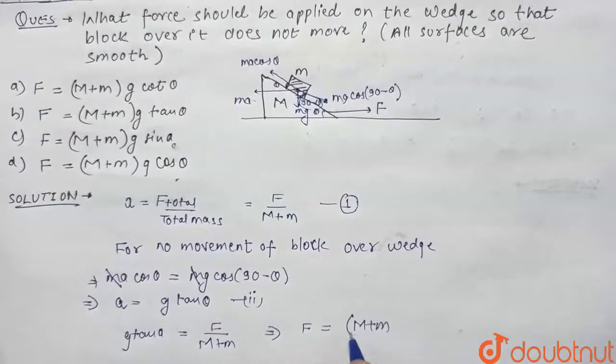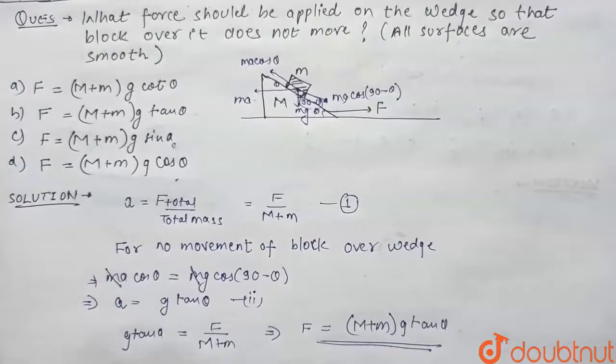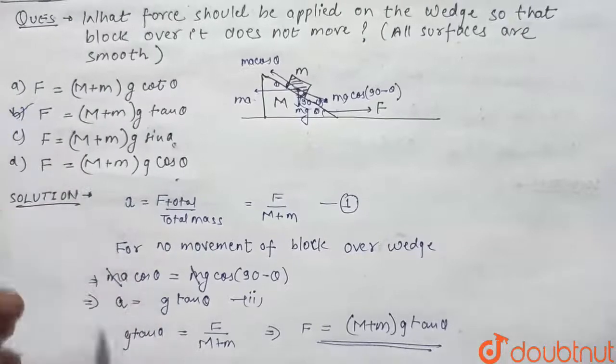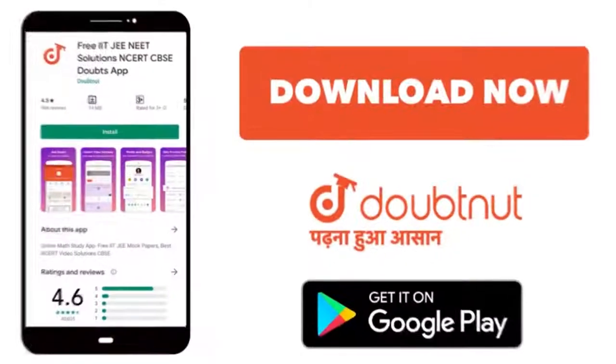So this is the force applied so that the block does not move over the wedge, and our correct option is option B. Thank you guys! For class 6 to 12th, IIT-JEE, and NEET level, trusted by more than 5 crore students, download Doubtnet app today.